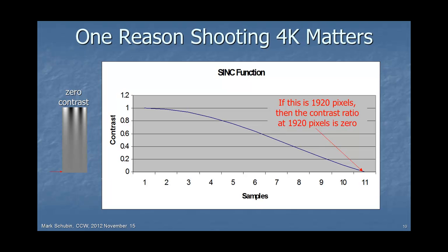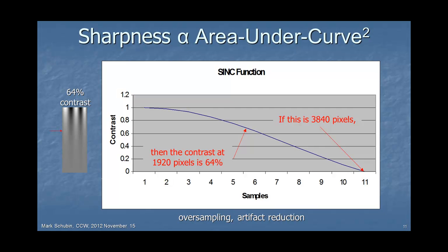Here's one reason why shooting 4K might matter. Let's say we have some camera and lens system — if the point where resolution falls to zero is 1920 pixels, then the contrast at 1920 pixels is zero. If instead that cutoff point is 3840 pixels, then the contrast at 1920 is 64%. So even to deliver HDTV, you might want to use a higher resolution camera. We knew this back in the NTSC days when people typically sold cameras with 1,200 image sensors per row for something that was going to be broadcast through the NTSC standard definition chain.